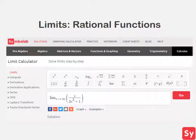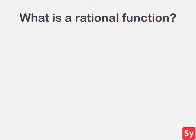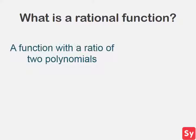Hey guys, it's Leah. Today we're going to learn about how to find the limit of a rational function as x approaches infinity or negative infinity. We'll first talk about what is a rational function. A rational function is a function with a ratio of two polynomials. We'll see this type of function in the form of f(x) equals p(x) over q(x), where p(x) and q(x) are polynomials.